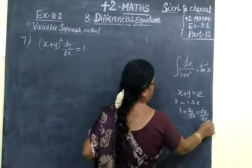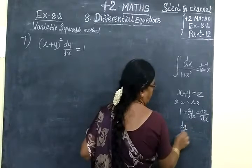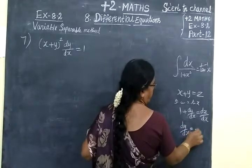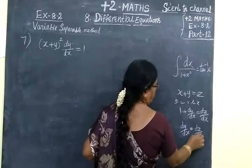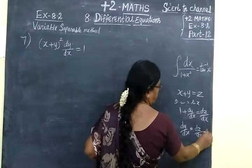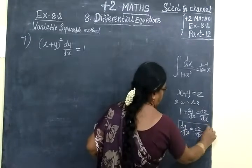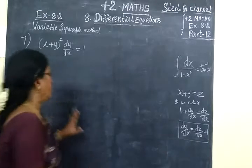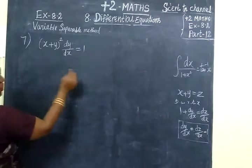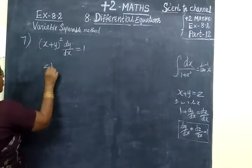So dz/dx gives dy/dx plus 1. Moving 1 to the other side, we get dy/dx = dz/dx minus 1. Now substitute this value of dy/dx in the original equation. x+y, which is z.